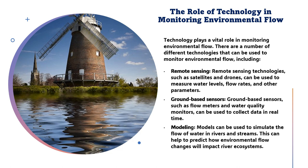Technology plays a vital role in monitoring environmental flow. There are a number of different technologies that can be used, including remote sensing — such as satellites and drones — to measure water levels, flow rates, and other parameters, including pollution levels. Ground-based sensors such as flow meters and water quality monitors can also be used to collect data in real time. Modeling can be used to simulate the flow of water in rivers and streams, which can help to predict environmental flow changes that impact river ecosystems.